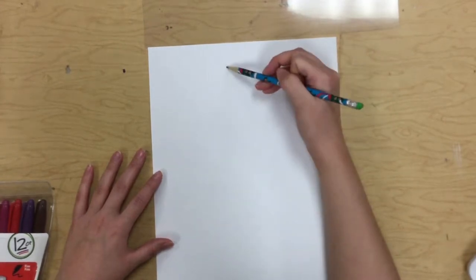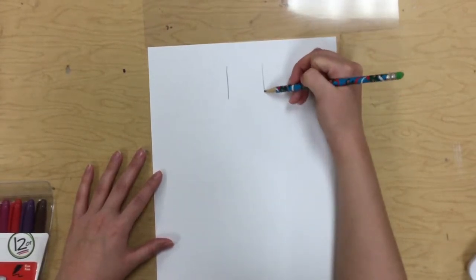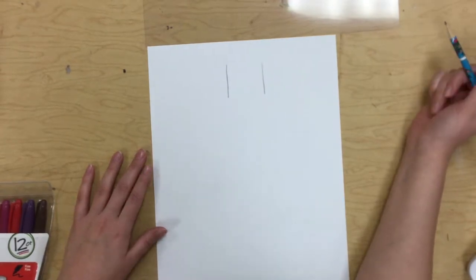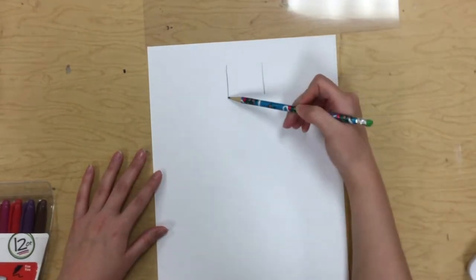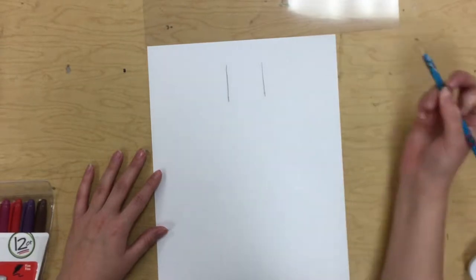I'm going to start with my neck. I'm pressing down much harder than I want you to press down because I want you to be able to erase if you make a mistake. Start with the neck.